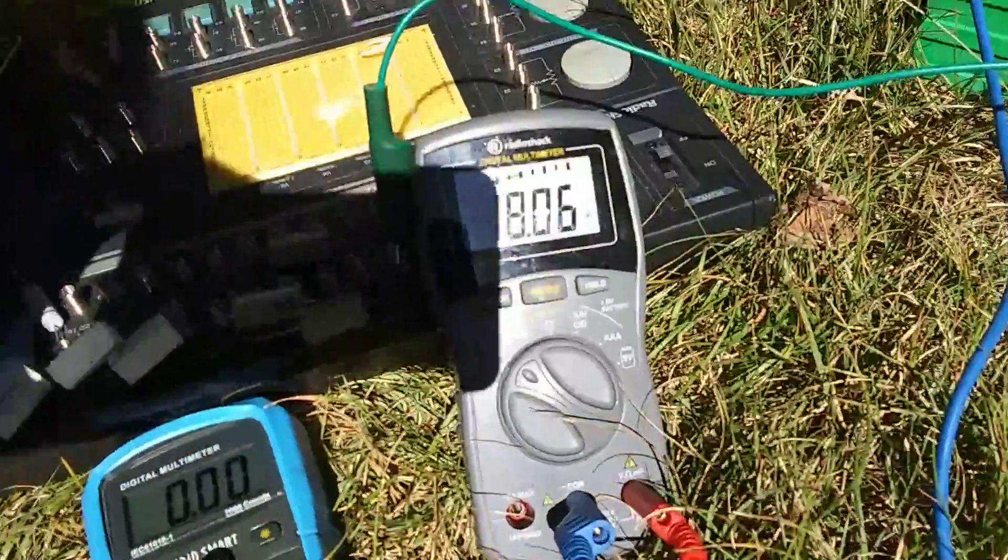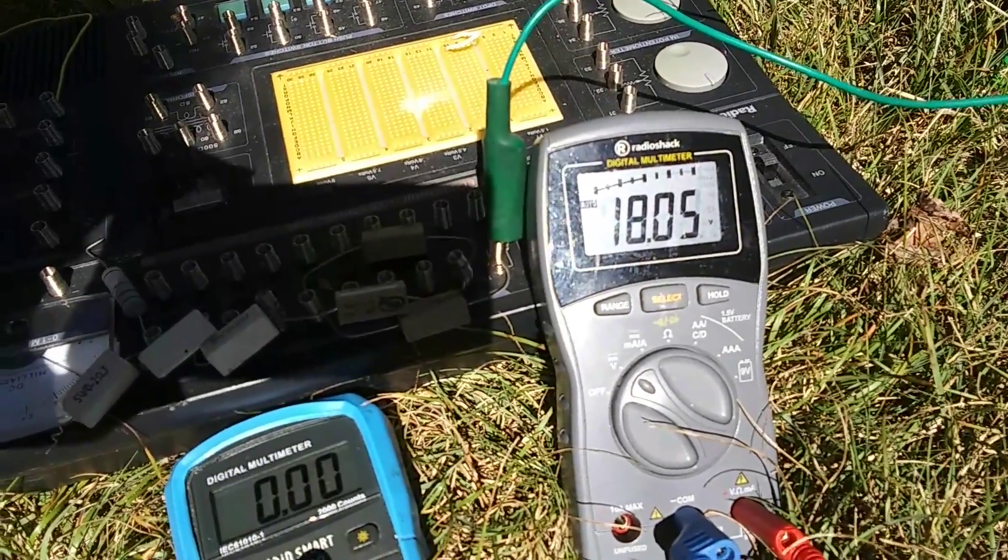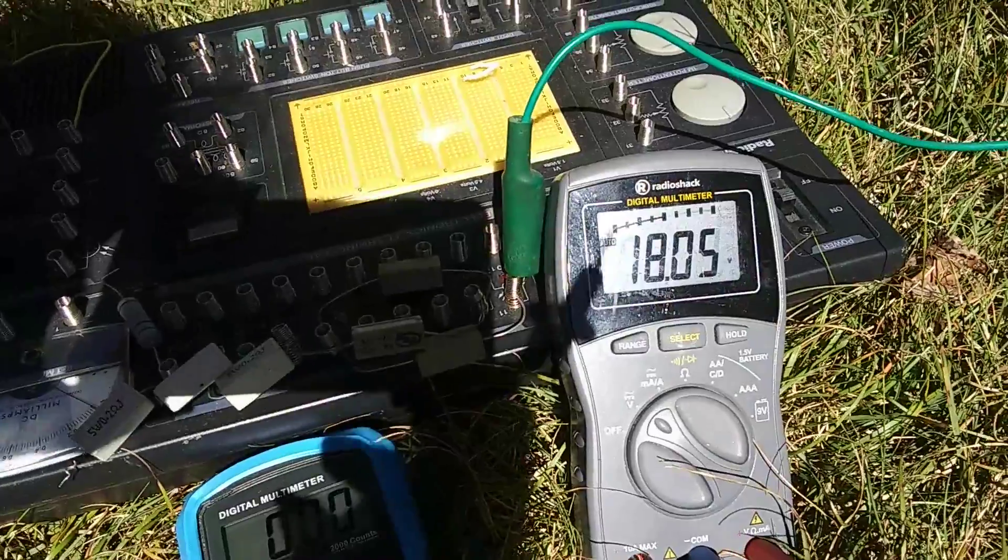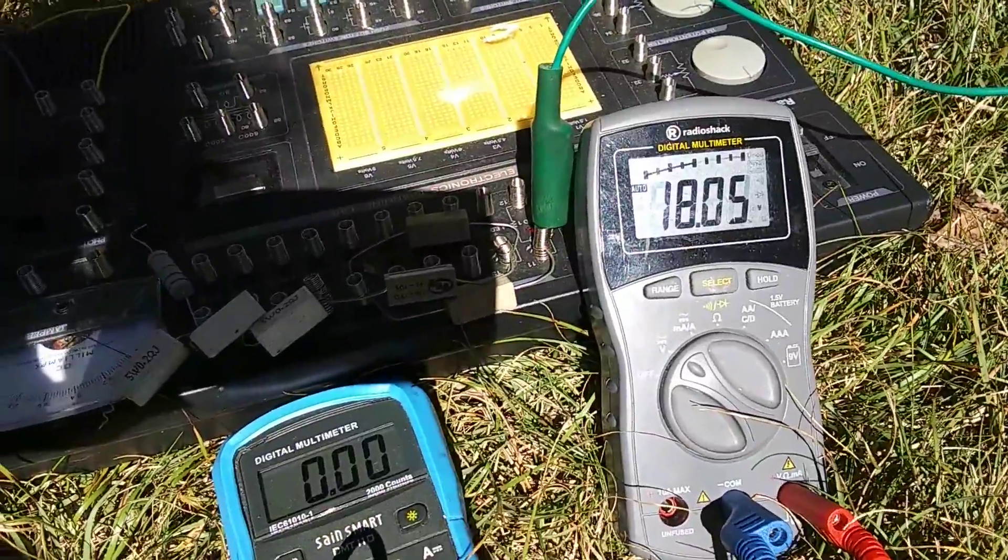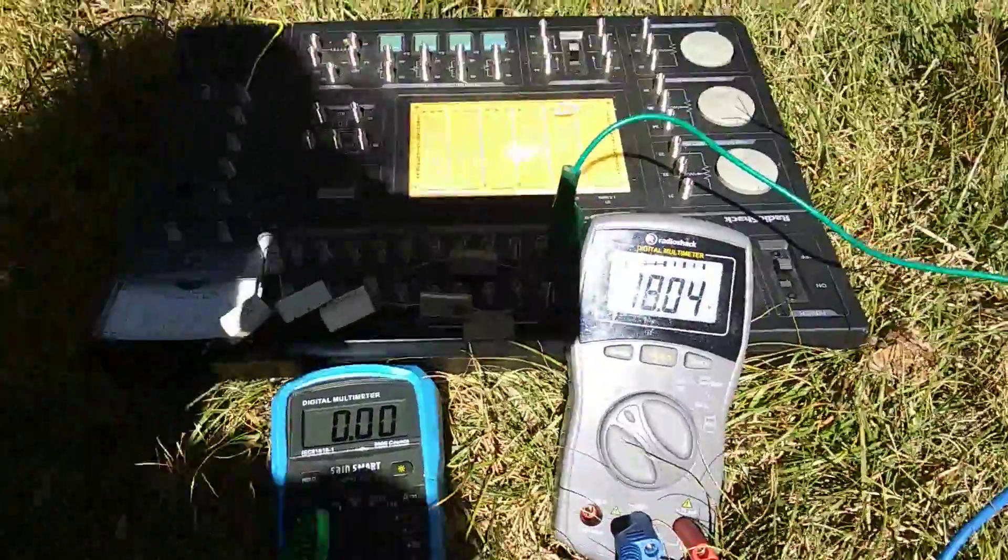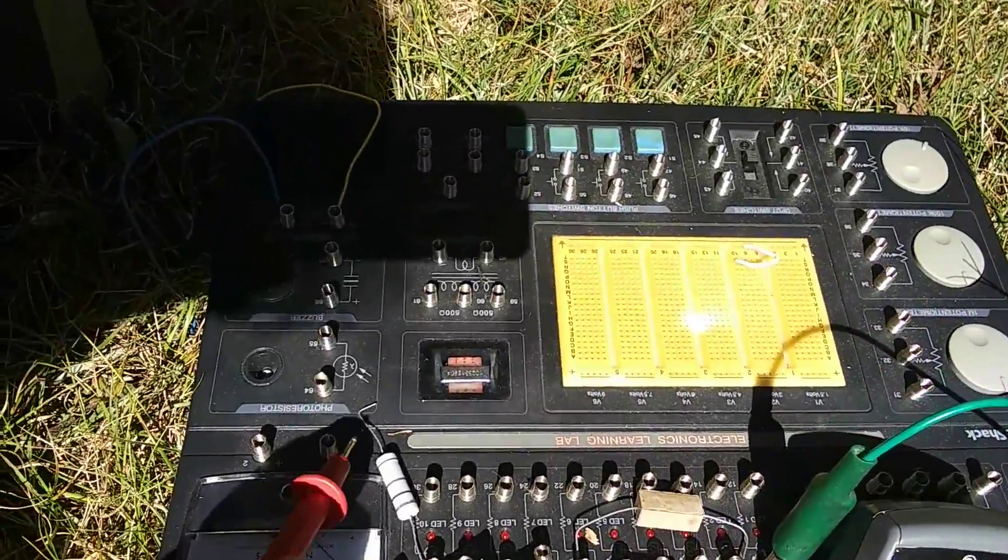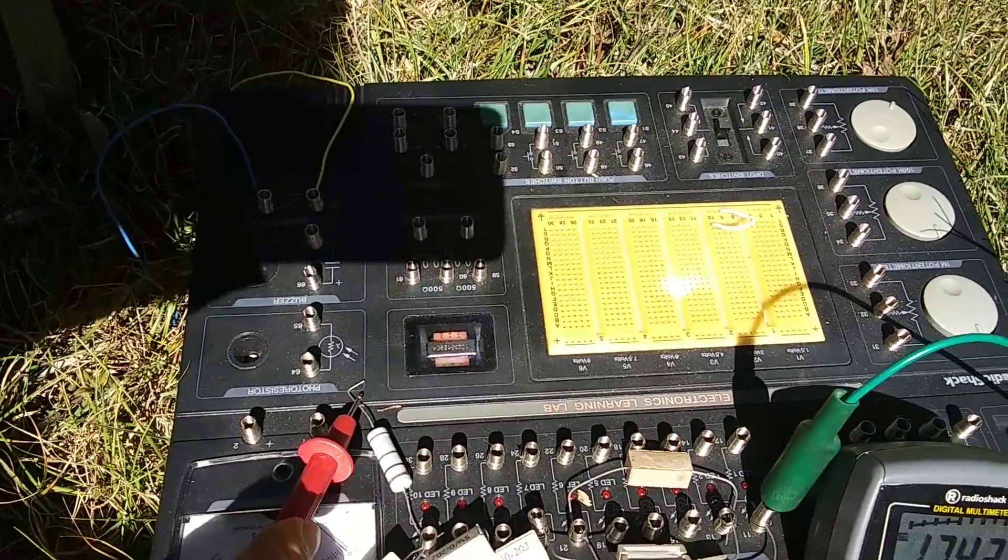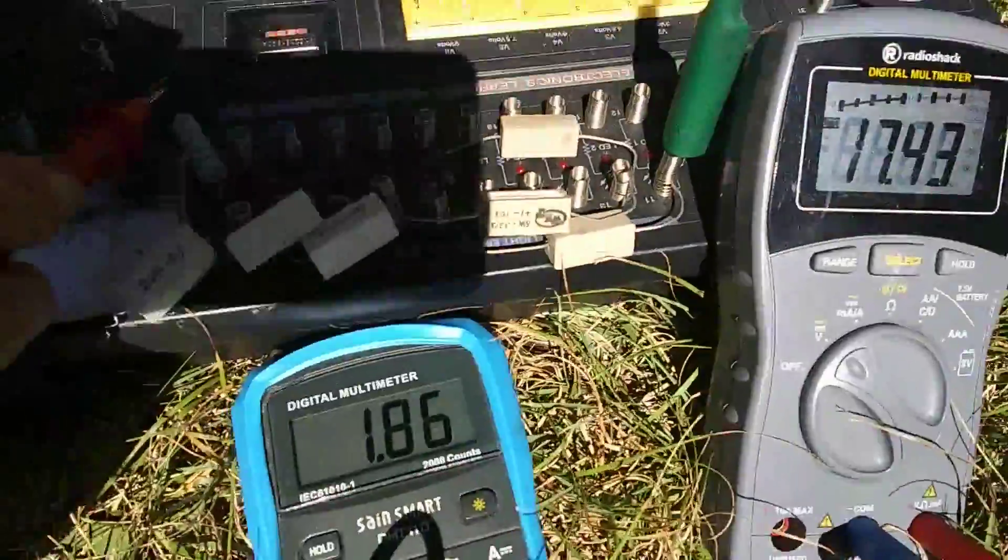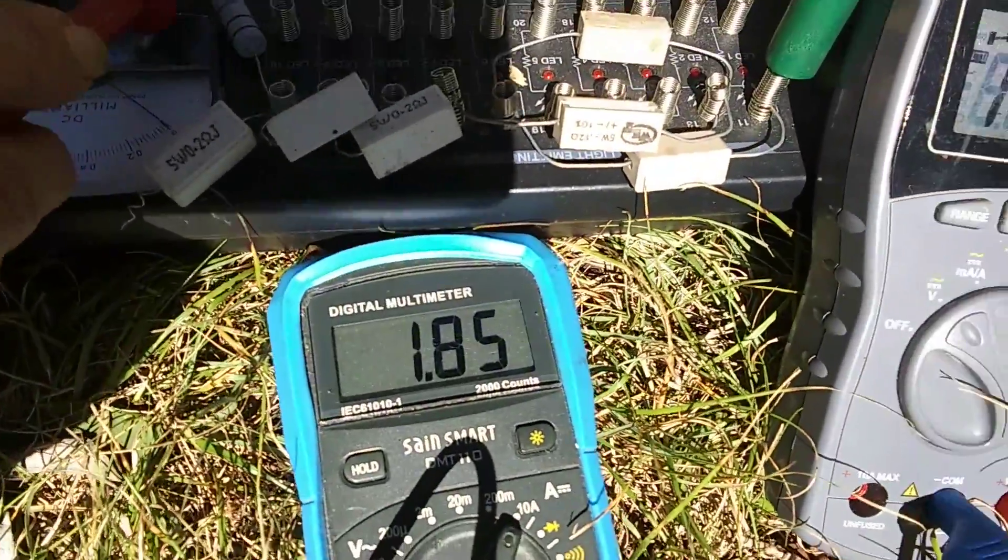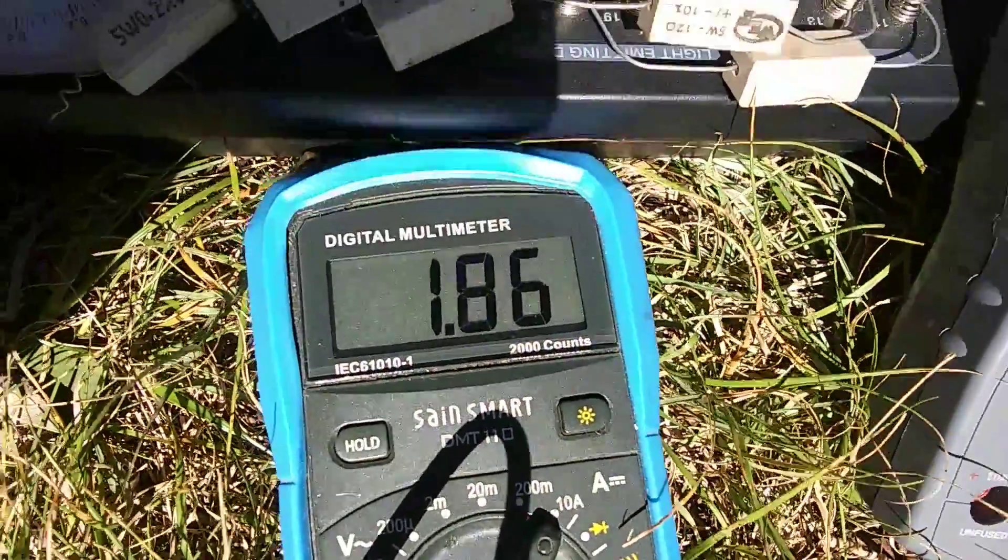So now the panel's warmed up a little bit already. It started at 18 and a half volts. Now just from heating up in the sun it's going down to about 18 volts. And so if I put, for example, the full string of resistors here, which is about 1.76 ohms, you can see the voltage has gone down to 17 volts and there's a current of 1.86 amps.